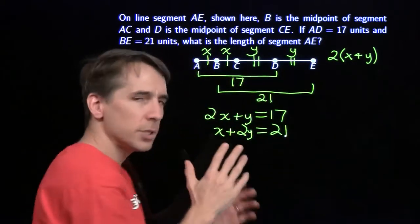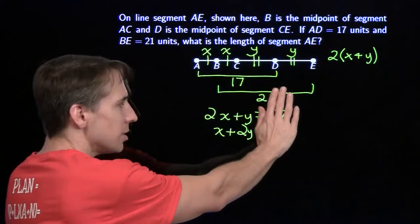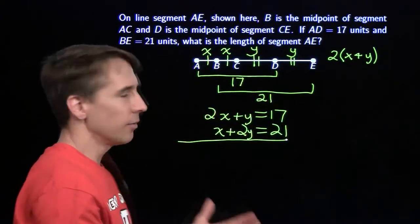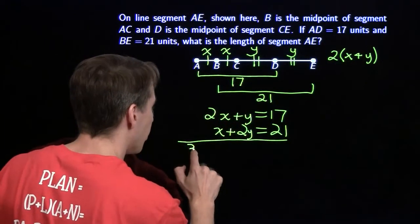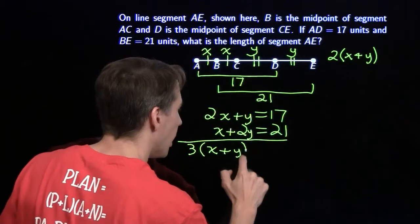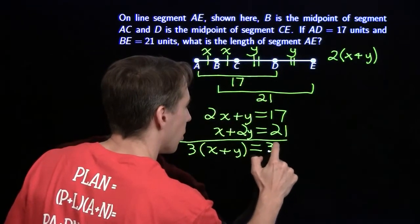Once again, I have a system of equations. I could use substitution or elimination, or I could see some symmetry going on on the left-hand side. I'm just going to add these up again. If I add these up, I have 3x's, 3y's. 3 times x plus y is 38.